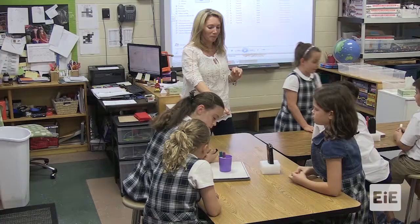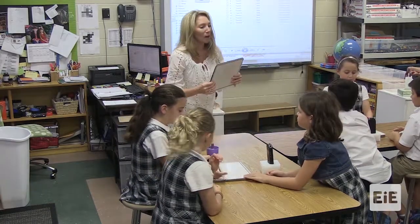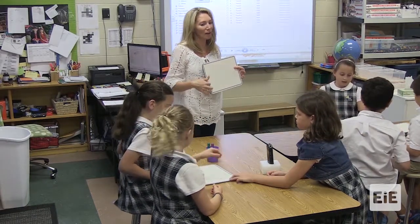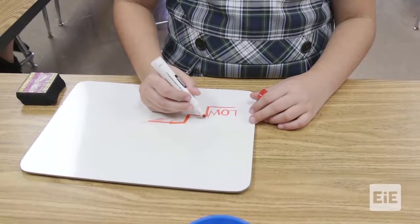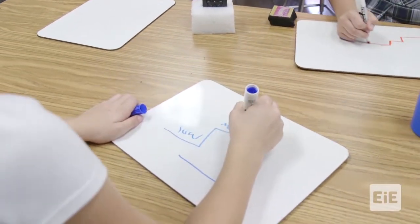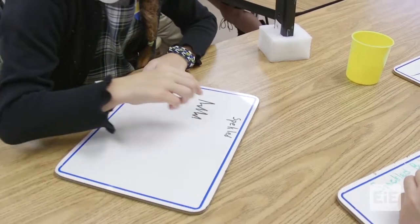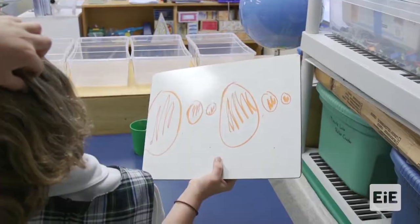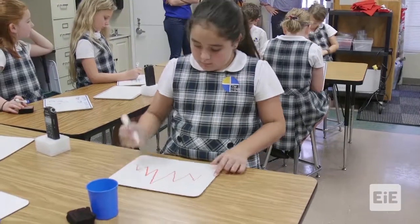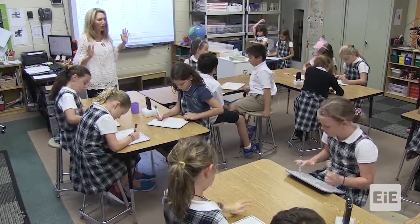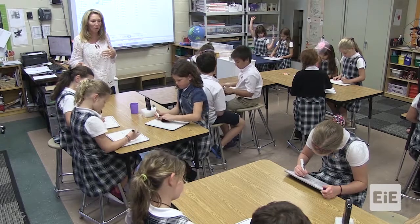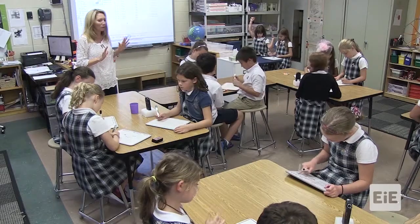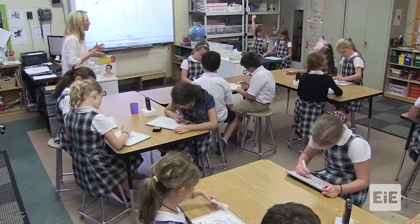On your desks there are your whiteboards and different color markers. Now as a team you can talk about it, but each one of you will have a way that you are going to write down that representation. I'm going to play the bird call one more time. Now I want to point out there is no wrong or right way to actually visually describe it to someone, as long as the person that you are showing it to understands what you are trying to get across.